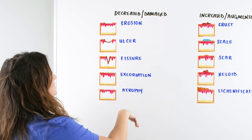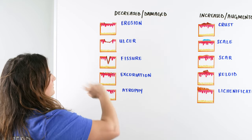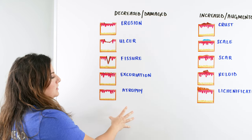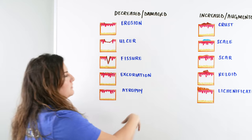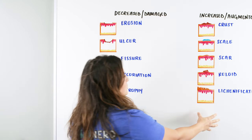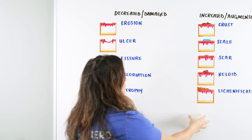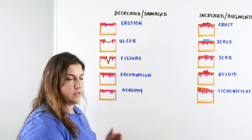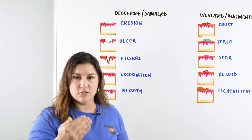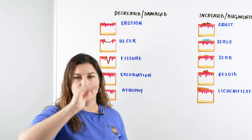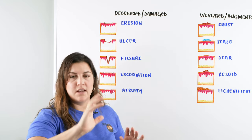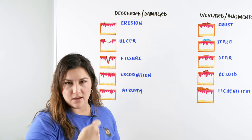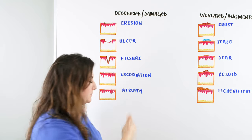Looking at the board here, on the left side we're going to talk about the decreased or damaged type of lesions, and then there are also the increased or augmented lesions. When we're talking about decreased or damaged, I want you to think about the layers of the skin — the epidermis, the dermis, the hypodermis — and how we're basically taking away or damaging those layers.